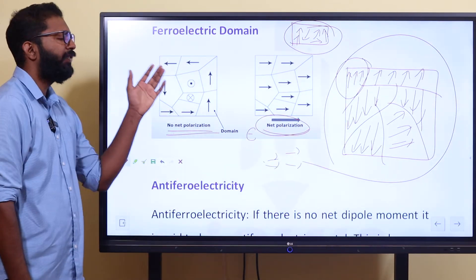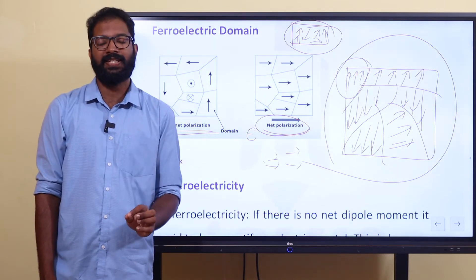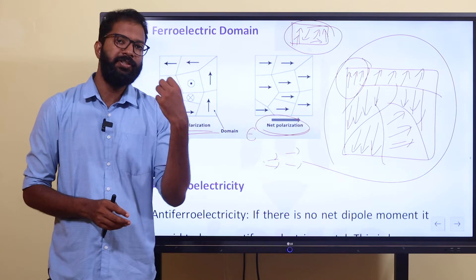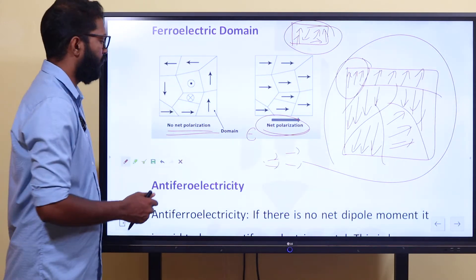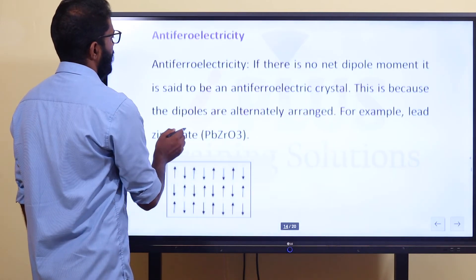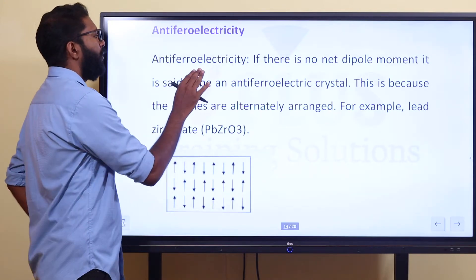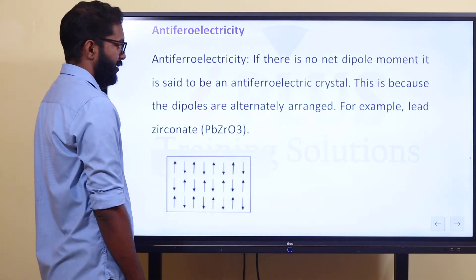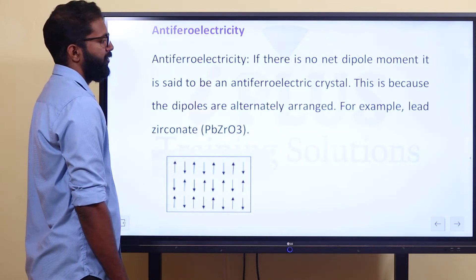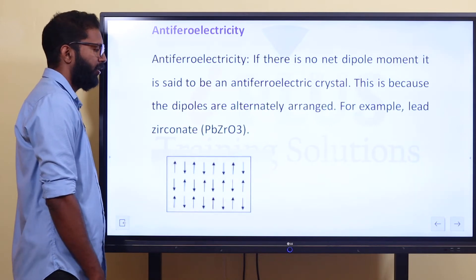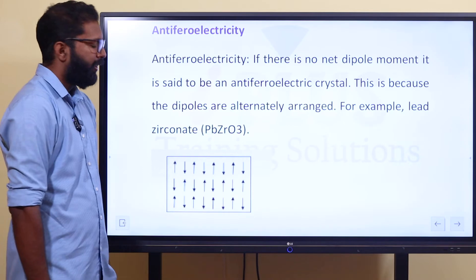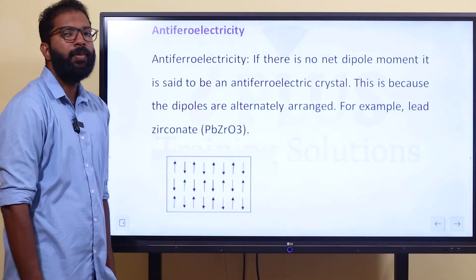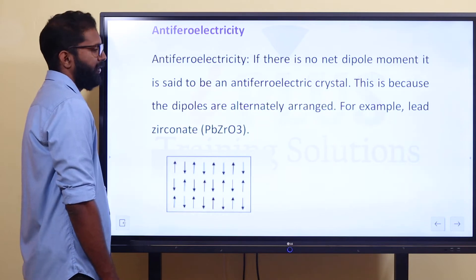If you take a domain where the dipoles are arranged such that there is no net field, that's pure anti-ferro electric. Then there is a net polarization only if the arrangement allows it. This is because the dipoles are alternately arranged. For example, lead zirconate is the best example of anti-ferro electricity — the dipoles are arranged alternately so there is no net dipole moment.